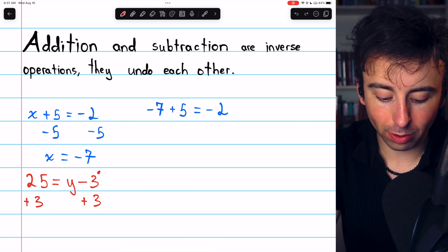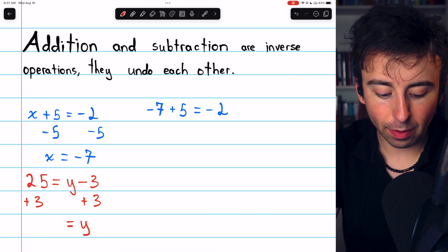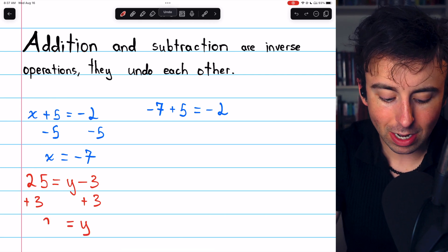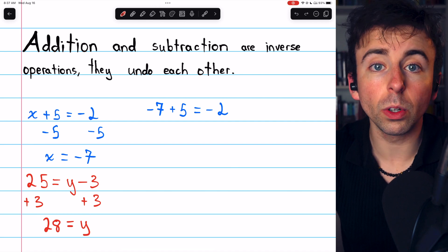On the right, of course, the minus 3 and plus 3 cancel out, and we're just left with y. On the left, 25 plus 3 is 28, and that is our solution, y equals 28.